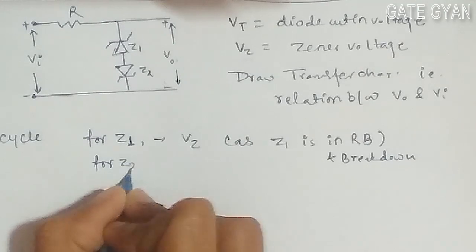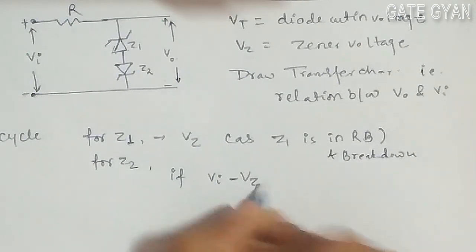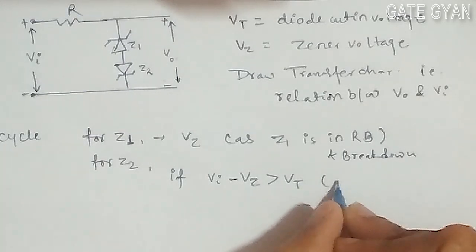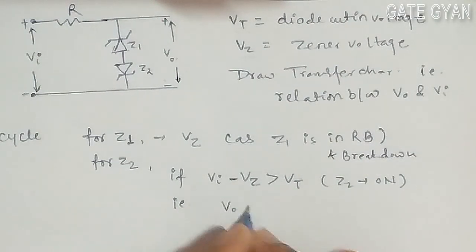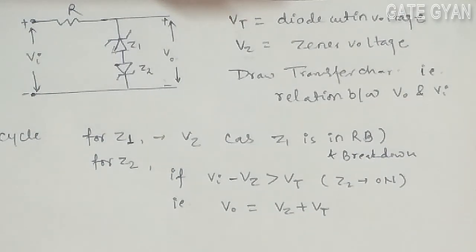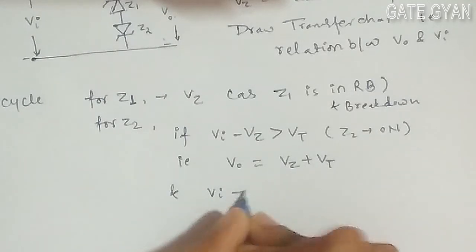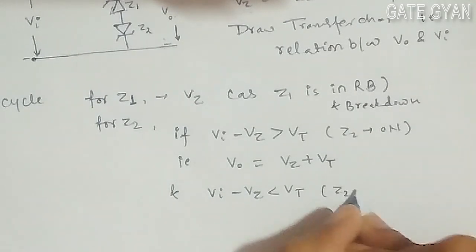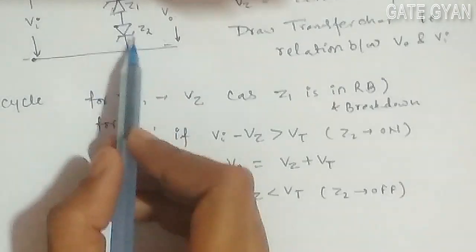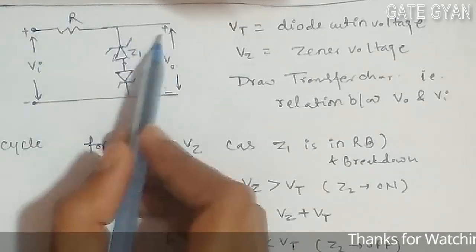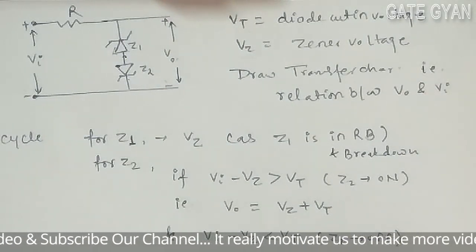For Z2: if Z1 is in reverse bias and VI minus VZ is greater than VT, then Z2 will be on. In that case, the output will become VZ plus VT — Z1 contributes VZ in reverse bias. For VI minus VZ less than VT, Z2 will be off, making an open circuit, so the output V0 will become directly equal to VI.